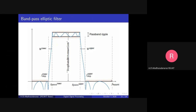The band pass filter has two stopbands and one passband. There is a narrow transition band on each side of the passband. This narrow transition band is the key advantage of the elliptic filter — much narrower compared to the Butterworth filter and a little narrower compared to the Chebyshev filter.